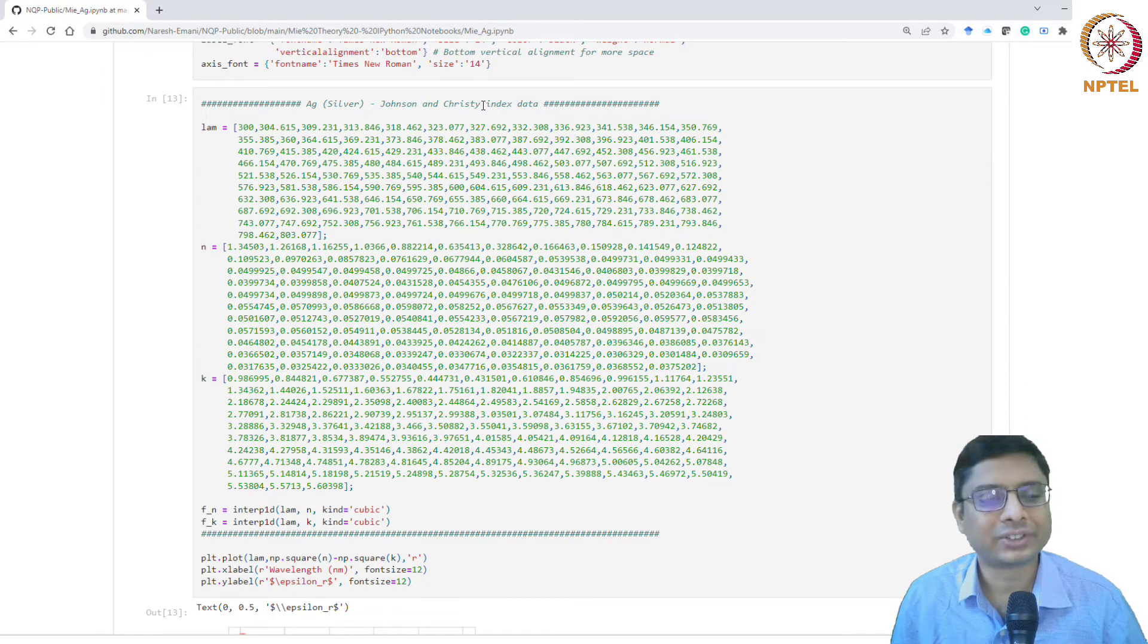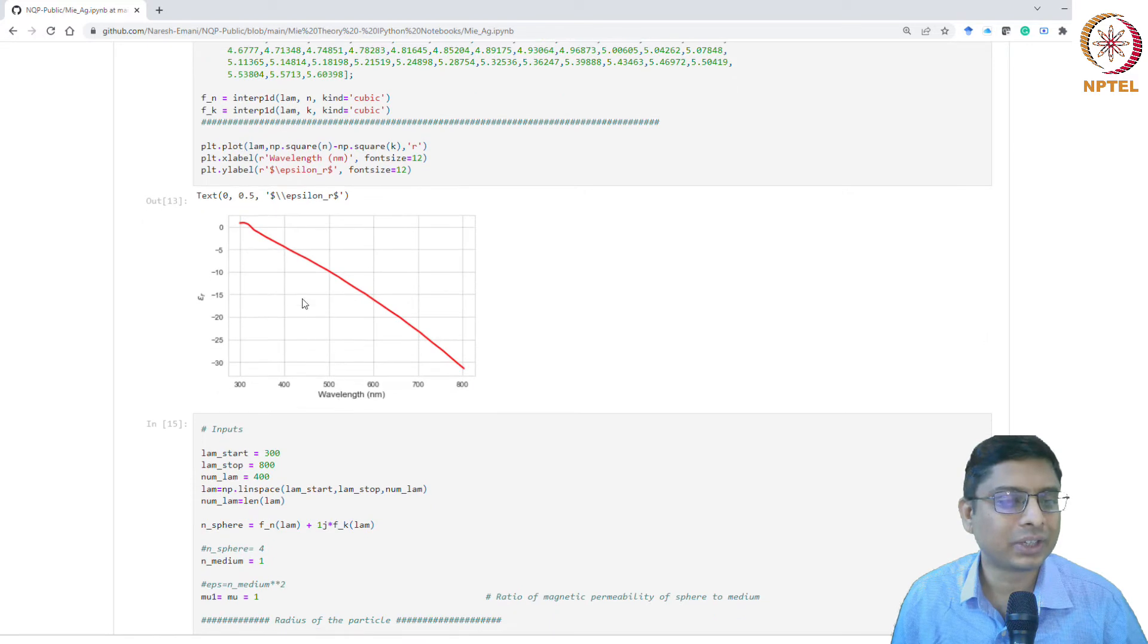Johnson and Christy is a standard reference for plasmonics. You have the various lambda values and then the refractive indices, the n and k values. Based on that you can compute. This is how the real part of refractive index looks as a function of wavelength.